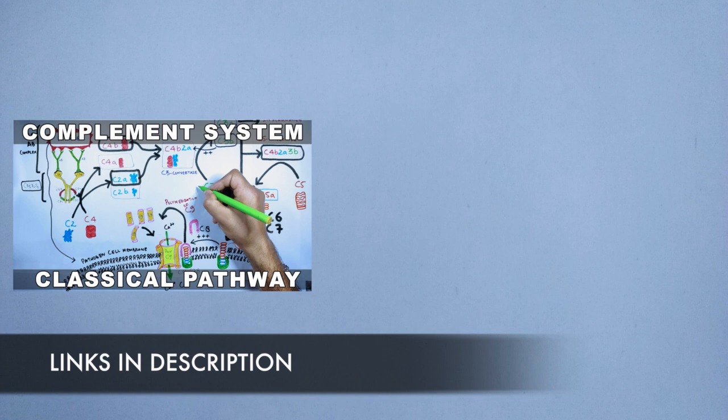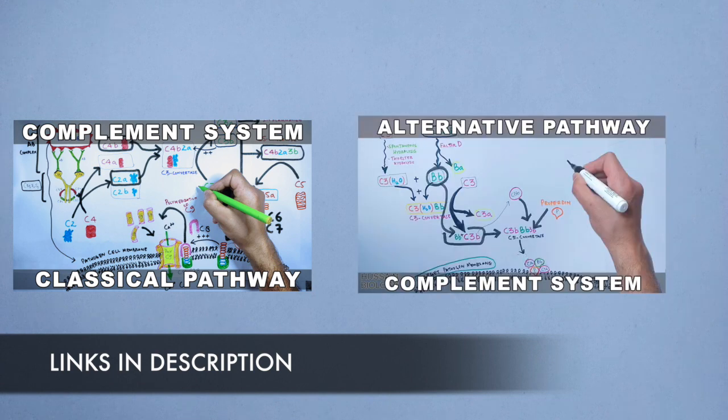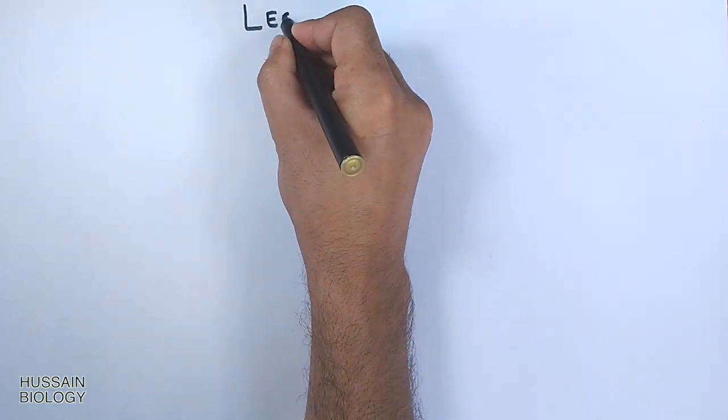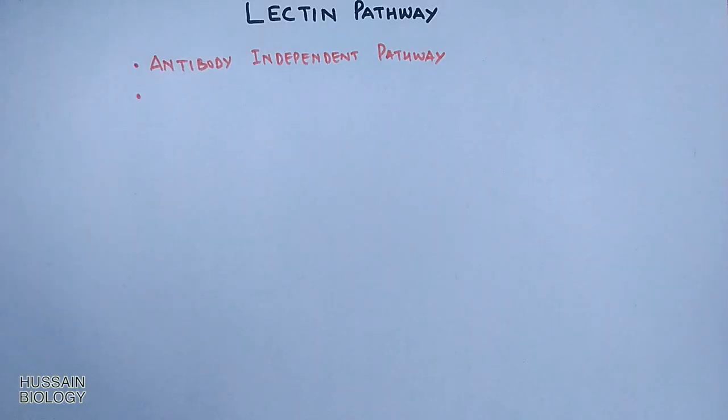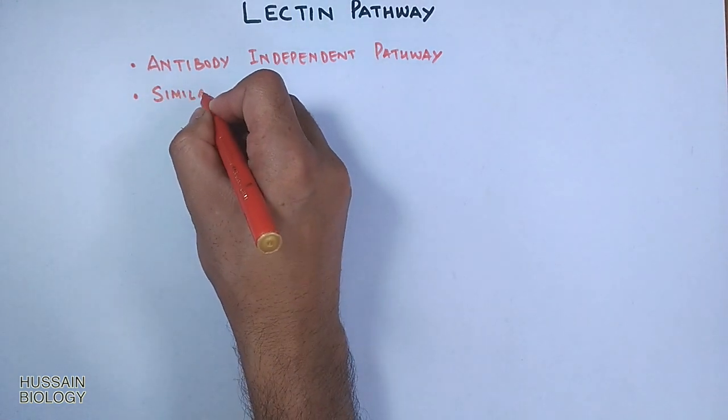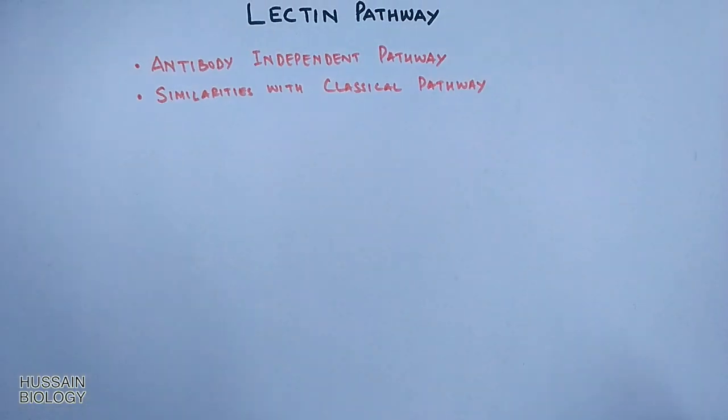In the previous videos we discussed the complement pathway driven through classical and alternative pathways. In this video we will discuss the lectin pathway of the complement system. The lectin pathway is an antibody-independent pathway, similar to the alternative pathway, and has similarities with the classical pathway as well.